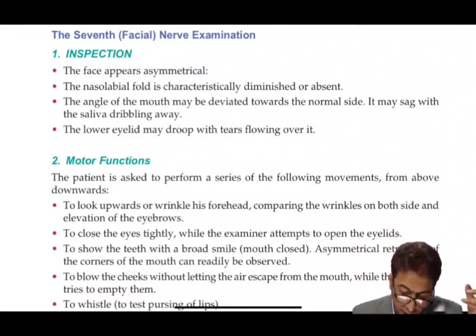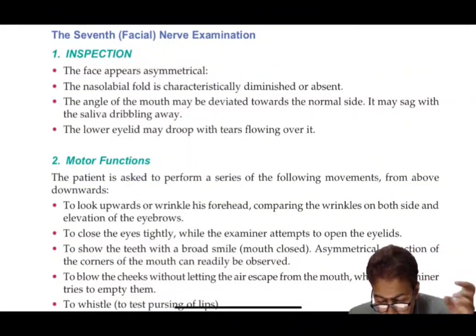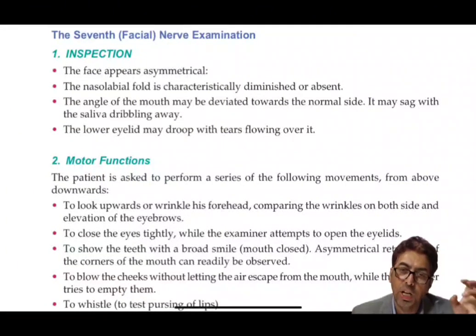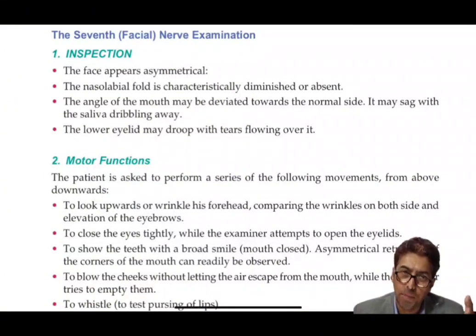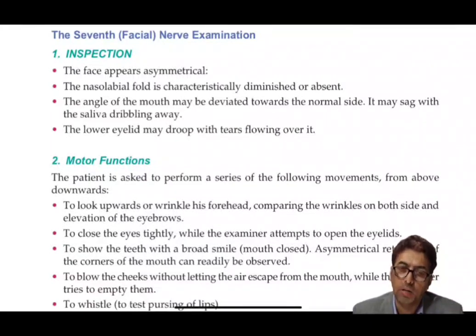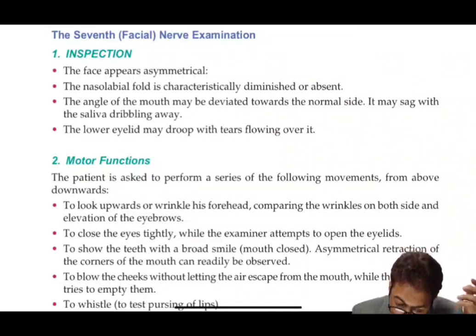From a medical perspective, lesions of the facial nerve are important. One of the most significant is Bell's palsy, which presents with facial weakness — weakness of the facial muscles. Bell's palsy is usually a lower motor neuron type of lesion, though upper motor neuron lesions can also occur. Bell's palsy is typically a temporary condition, most often post-herpetic or post-viral, causing temporary paralysis of the facial muscles.